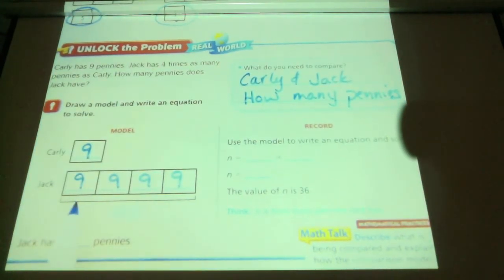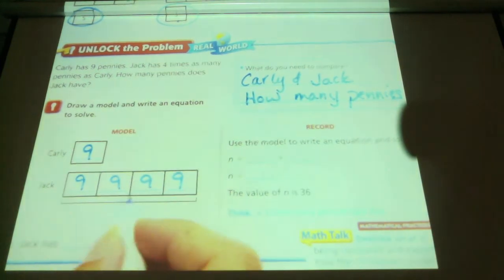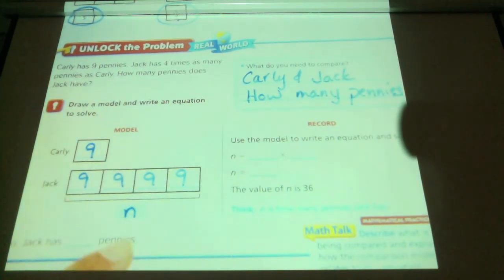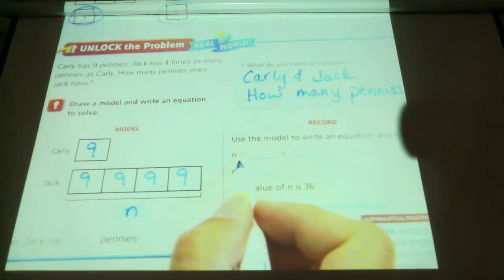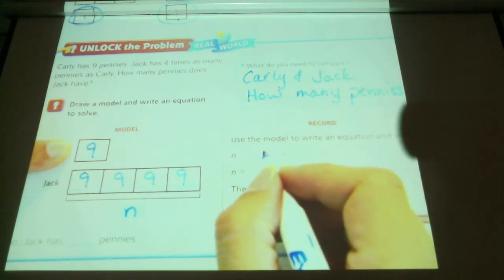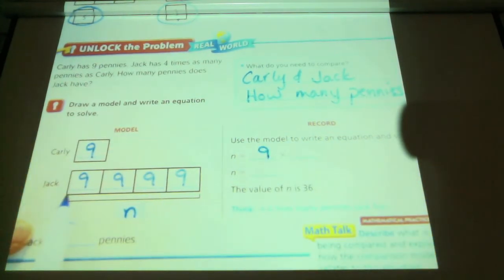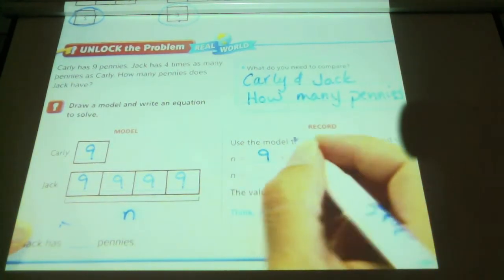So if we use this model here, we're looking for this n. We want to know what this number is. So we want to find out what this n is. To find the n, we're going to take Carly's amount, and we're going to multiply it by how many? 4. 4.